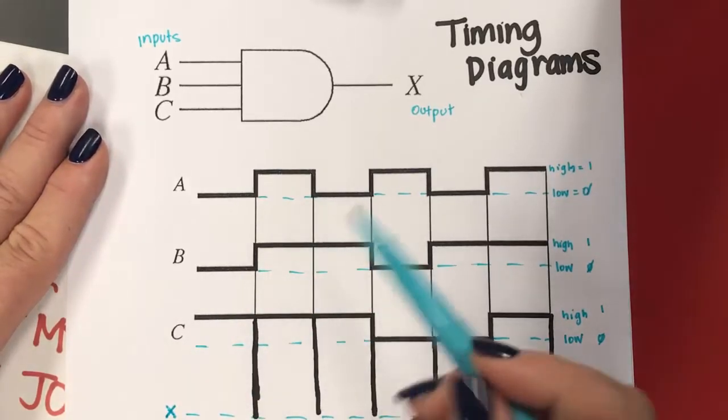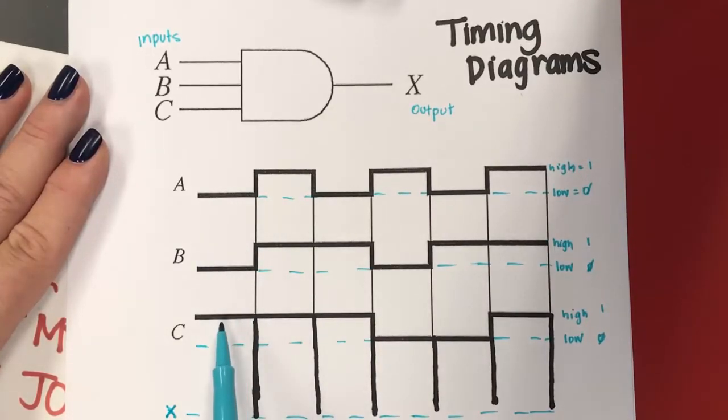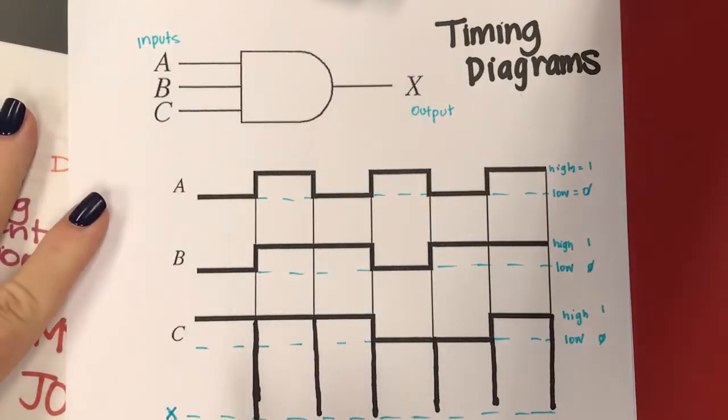So right here when we start, we see that A is zero, B is zero, and C is one. So if it was an AND diagram, that means everything has to be one for the output to be one, so right there coming in, that value would be low. I change pens just so it'll show up a little better.